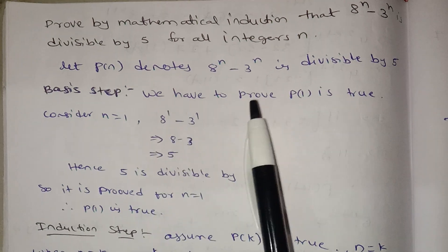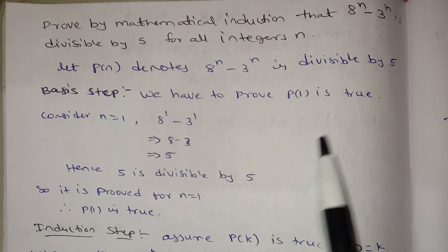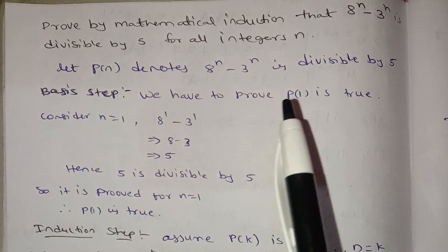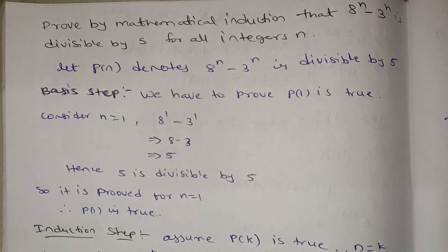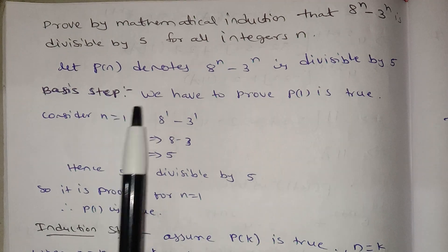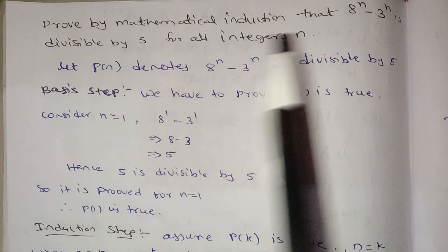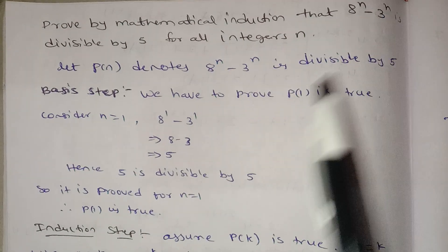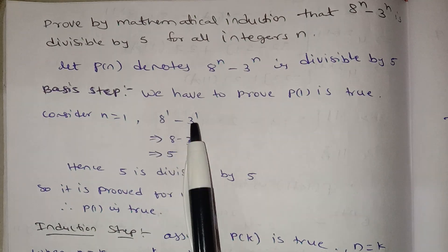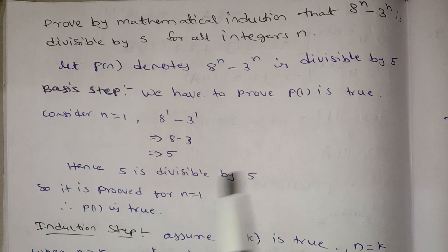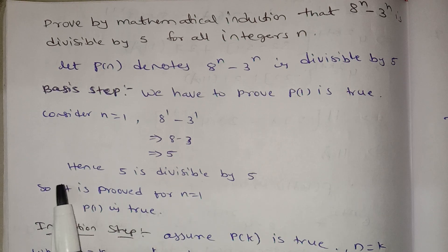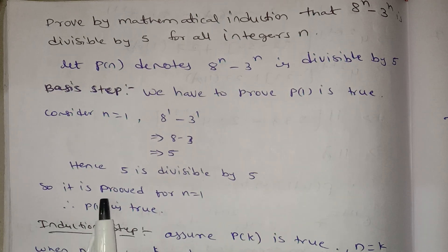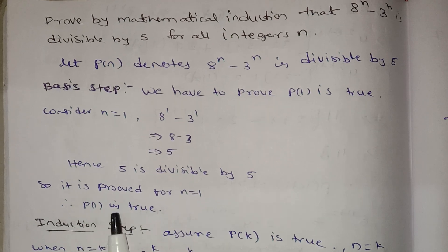We have to prove P of 1 is true. Consider n equal to 1: 8 power 1 minus 3 power 1 equals 8 minus 3 equals 5. So 5 divided by 5 is equal to 1. It is divisible by 5. So it is proved for n equal to 1, and P of 1 is true.